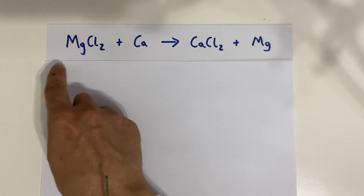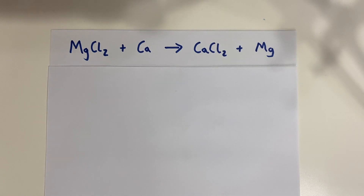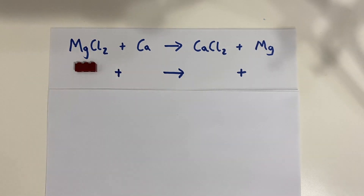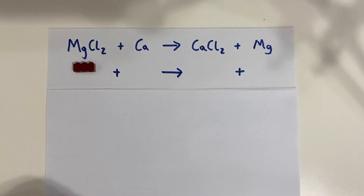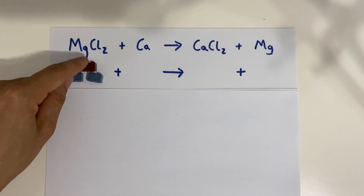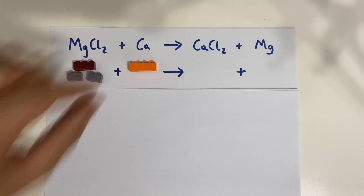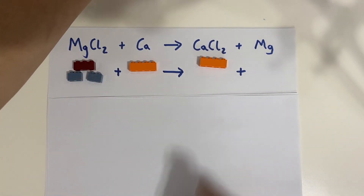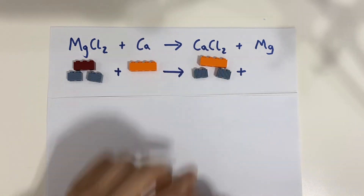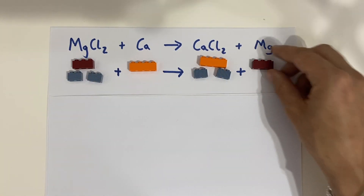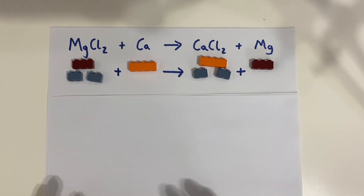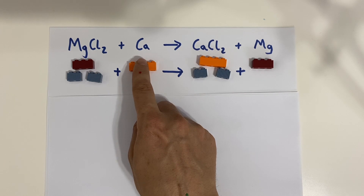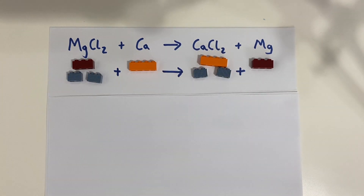Let's have a look with Lego bricks to see exactly what's happening. We'll use a brown block for magnesium. Because there are two chlorines, we'll use two small blue ones for chlorine. So: one magnesium, two chlorines. Then we've got one calcium — we'll use an orange brick. On the product side: one orange brick, two blue ones for chlorine, and one brown block for magnesium. Checking: one brown before, one brown after; one orange before, one orange after; two blue before, two blue after — so this makes sense.